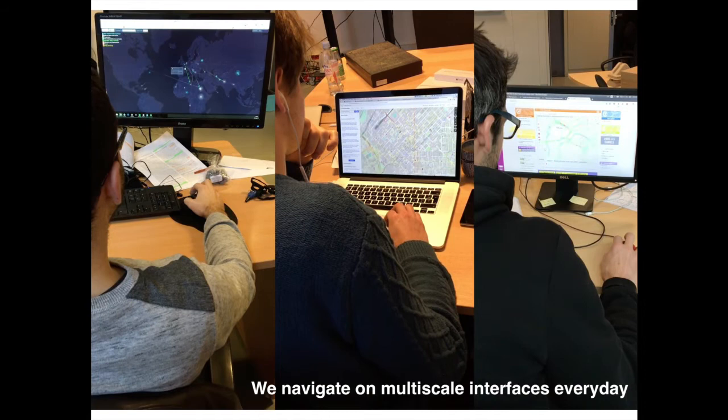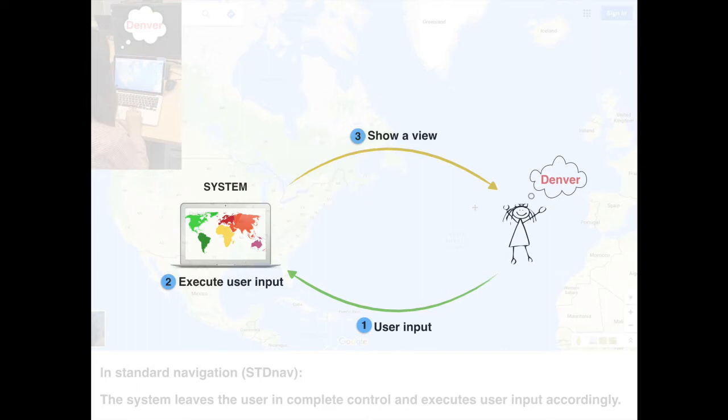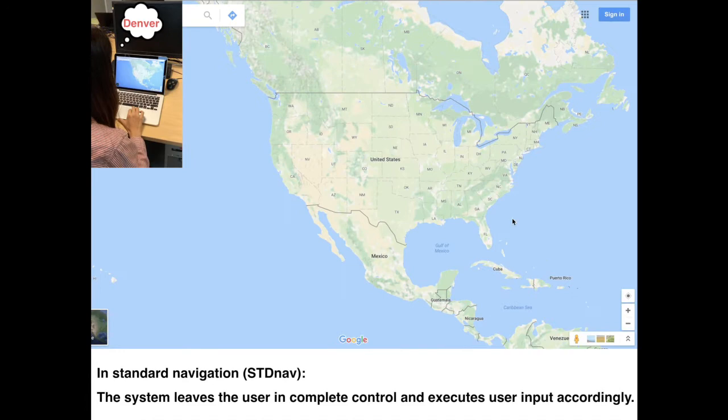In standard navigation, the system executes user input directly to show the user a new view. But giving the user full control is sometimes inefficient and even frustrating. How can we improve multiscale navigation, letting the system play a more active role?